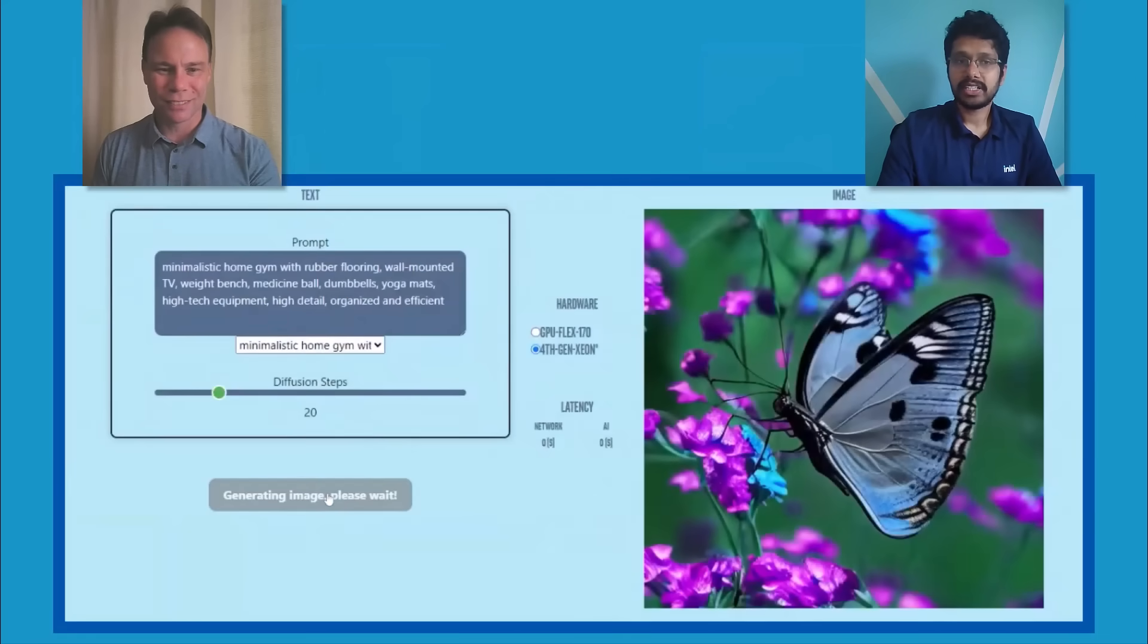This shows stable diffusion text-to-image generation. This model is made up of multiple modalities: a text encoder to handle the prompt, a unit to perform the diffusion steps, which is the bulk of the processing, then an image decoder to generate the output. So it is a large and computationally intensive workload.